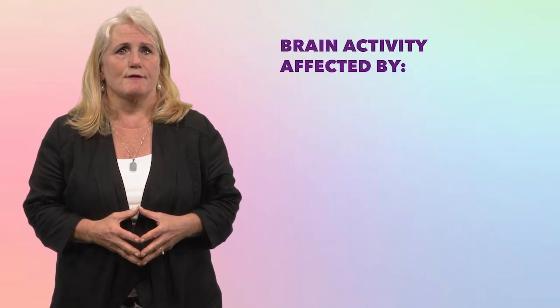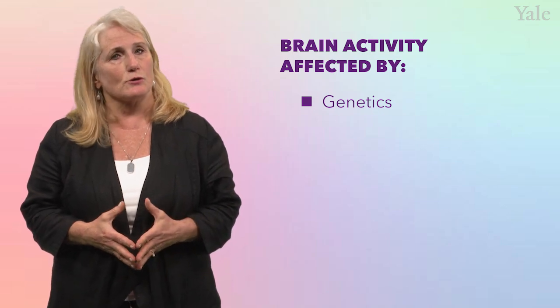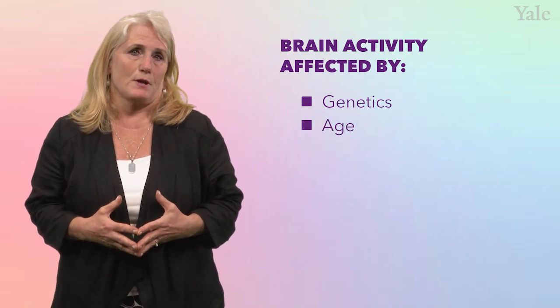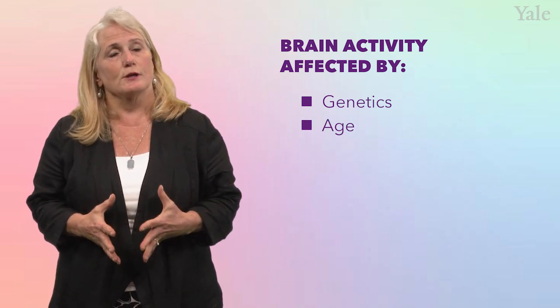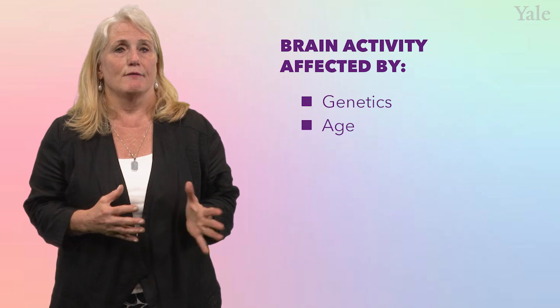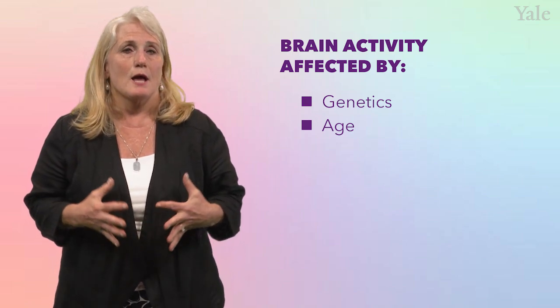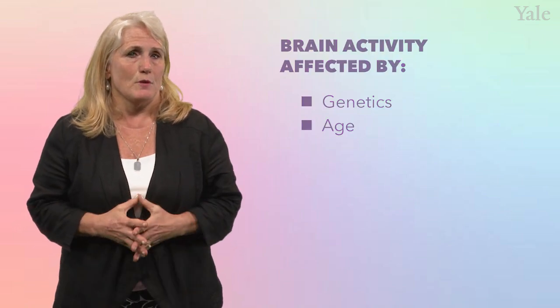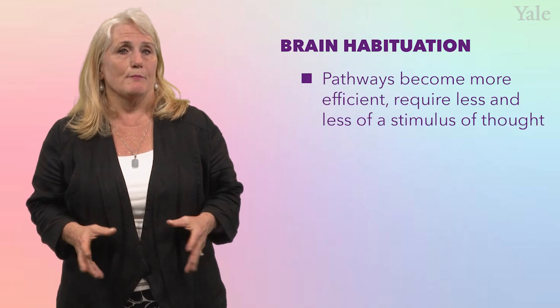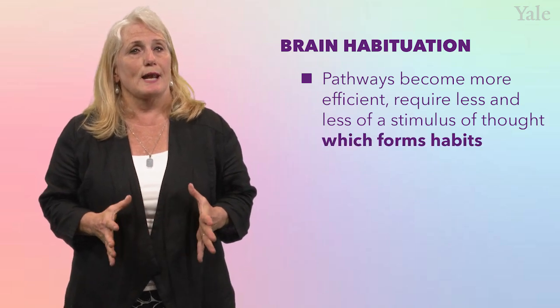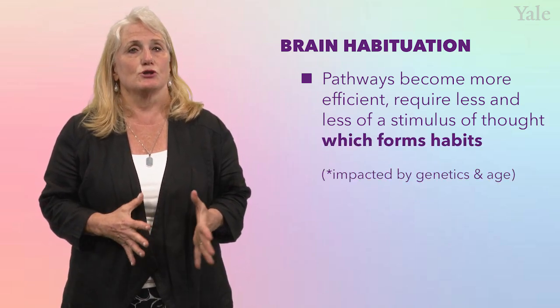Most brain activity is affected by an individual's specific genetic makeup, and this is certainly true for substance use. Additionally, when an individual starts using impacts the risk of addiction. The younger one starts using, the more efficient intracellular and neuronal communication becomes. This is due to myelin — a fatty substance like insulation around a wire — which helps signals work fast and efficiently and is produced during several periods in younger life. With repeated substance use, brain habituation occurs. Over time, pathways used repetitively become more efficient, require less and less stimulus, and create habits — also impacted by genetics and age of use.